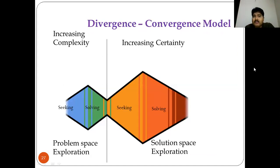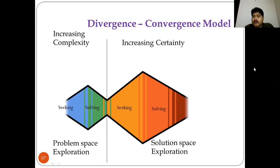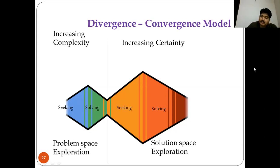This can also be described as a divergence and convergence model with problem space exploration and solution space exploration. In the problem space, you increase complexity, making the problem more expansive so you can address needs beyond what was specified. In the solution space, you increase certainty through a convergent approach — generating many ideas and then using prototyping to narrow them down, then fine-tuning through testing before passing to downstream process requirements.